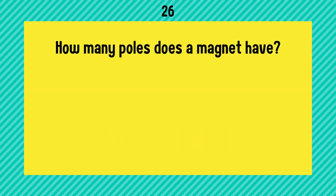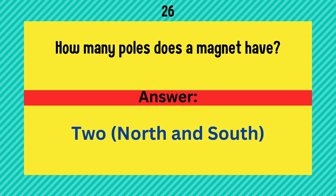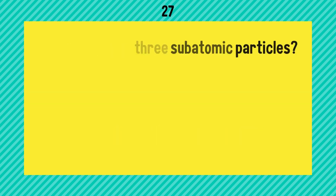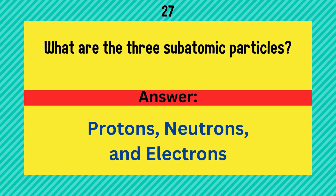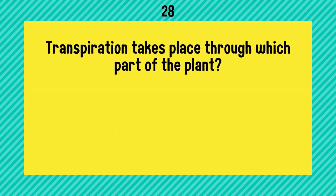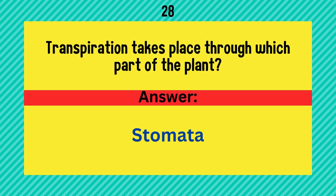How many poles does a magnet have? A magnet has two poles — north and south. What are the three subatomic particles? Protons, neutrons, and electrons. Transpiration takes place through which part of the plant? Answer is stomata.